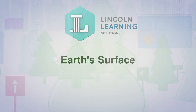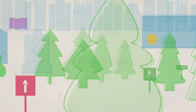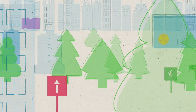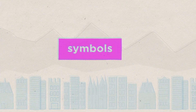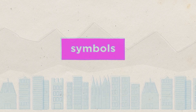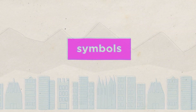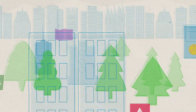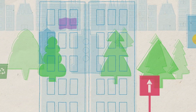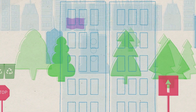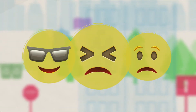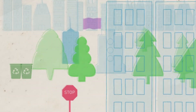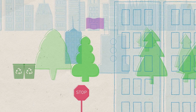You can find symbols in many places in the world around you. A symbol is a picture or drawing that stands for something real. People use symbols to communicate something. These symbols stand for emotions and real objects.